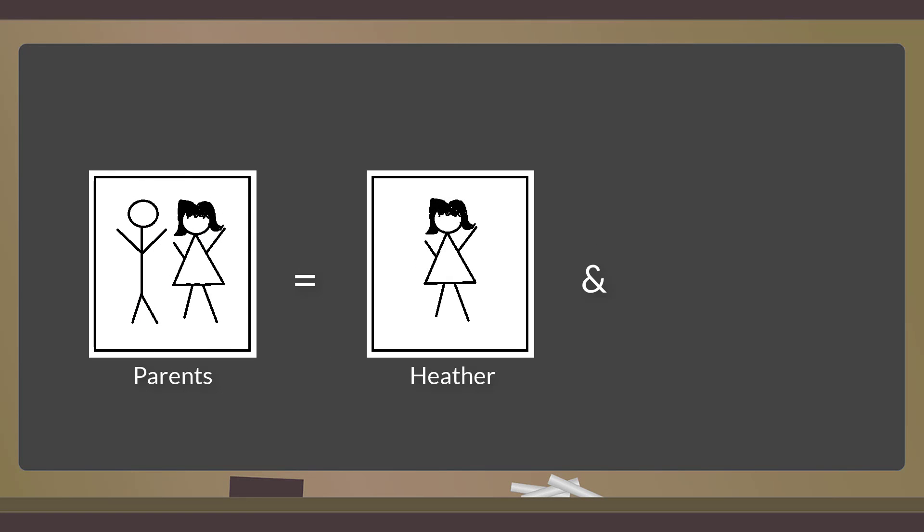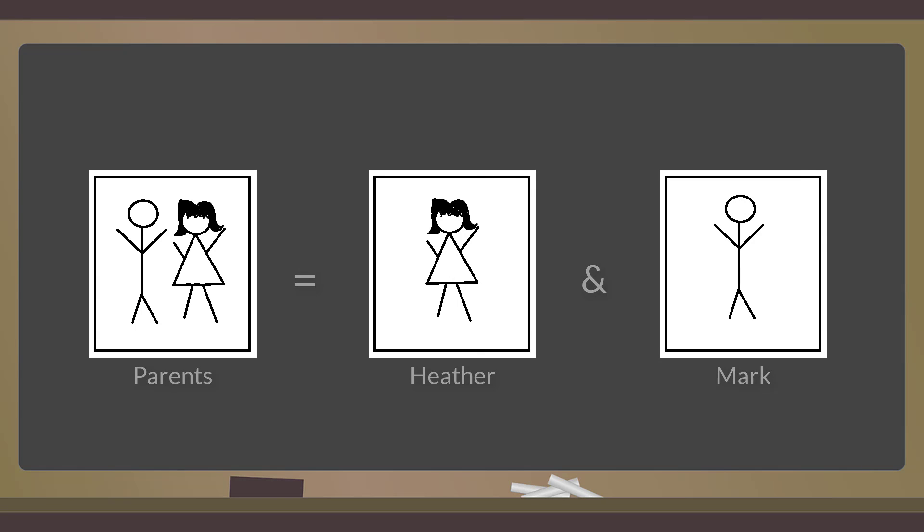Let's consider the following sentence. Amy went to lunch with her parents, Heather, and Mark. If this sentence is saying that Amy and her parents, whose names are Heather and Mark, went and had lunch together, then the sentence is fine.